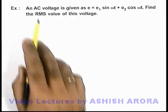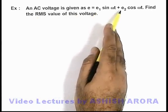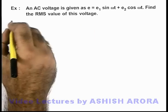In this example, we are given that an AC voltage is given as e equals e₁ sine omega t plus e₂ cosine omega t, and we are required to find the RMS value of this voltage.